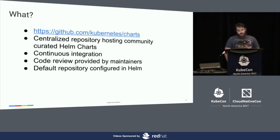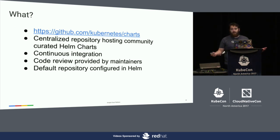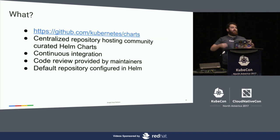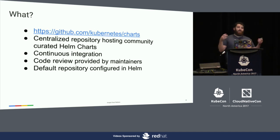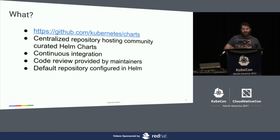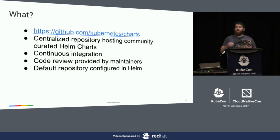The charts repo is kubernetes/charts on GitHub. It's the centralized repository where we're hosting and maintaining charts that you as a community have provided. It's basically a place where we can get together, take our knowledge of applications and how you configure and use them, so that everybody has at least a starting point. We provide continuous integration — a testing subsystem that runs your chart, makes sure it passes the linter, actually installs properly, and makes sure pods go running. We also have code review provided by maintainers. It's the default repository when you install Helm, so when you do a Helm search, those are the charts that we have there.